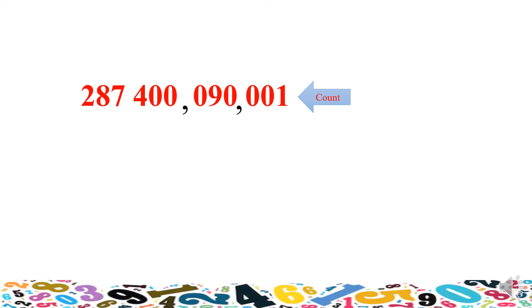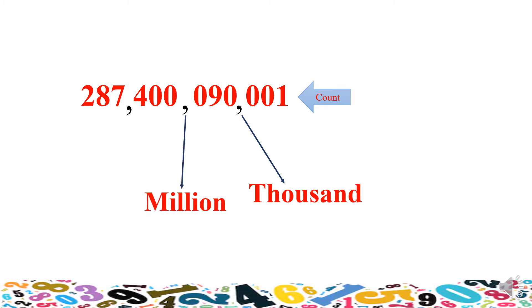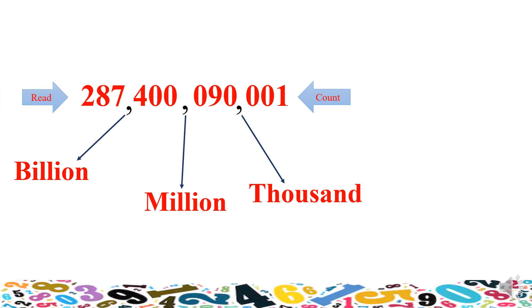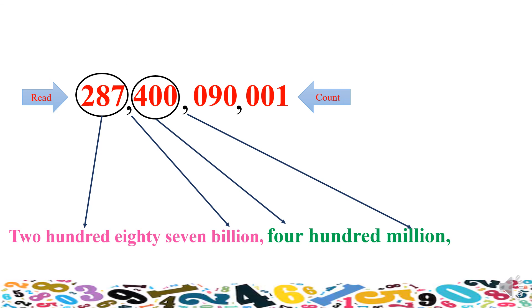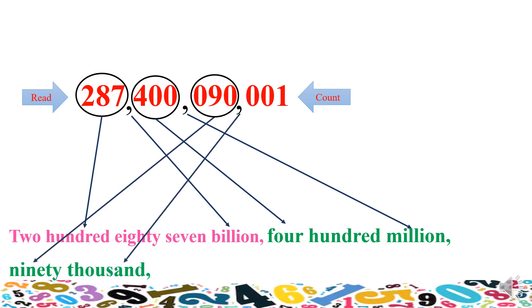Another example — the same process. We count from the right side: three digits, then the first comma; three digits, then the second comma; three digits, then the third comma. The first comma is for thousand, the second is for million, and the third is for billion. Let's read this number together: two hundred eighty-seven billion, four hundred million, ninety thousand, one.